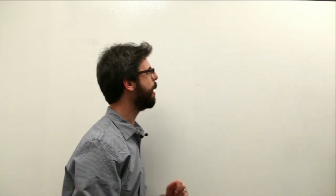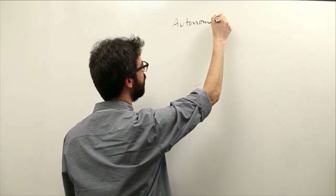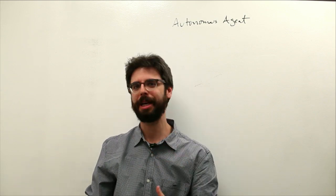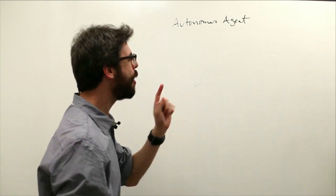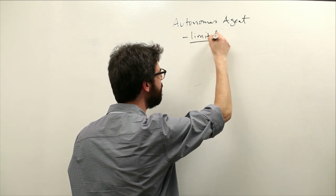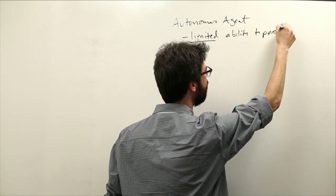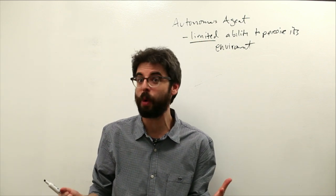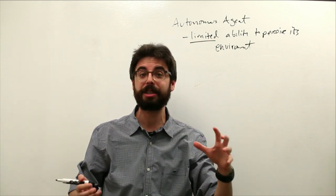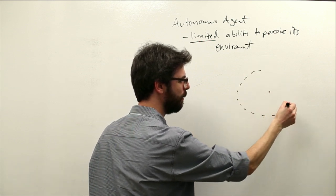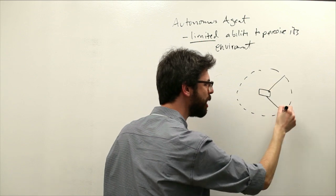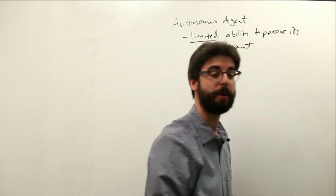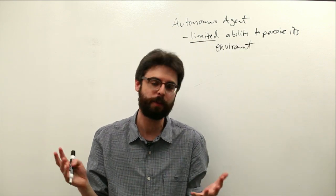Let's take a moment to define what we mean by autonomous agent. One principle is that an autonomous agent has a limited ability to perceive its environment. This may seem like a trivial detail, but it becomes quite an important factor in what we end up programming. Are the things on screen able to see anything within 25 pixels of itself? Or can this object only see things in front of it at a certain distance? We want to start building entities — objects that have virtual software sensors on them.